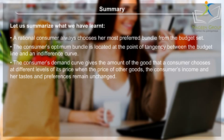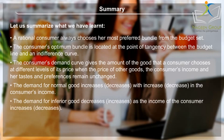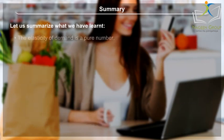The consumer's demand curve gives the amount of the good a consumer chooses at different levels of its price, when the prices of other goods, the consumer's income, and her tastes and preferences remain unchanged. The demand for a normal good increases or decreases with increase or decrease in the consumer's income. The demand for an inferior good decreases or increases as the income of the consumer increases or decreases. The market demand curve represents the demand of all consumers in the market taken together at different levels of the price of the good. The elasticity of demand is a pure number.